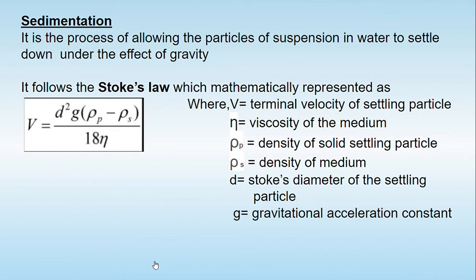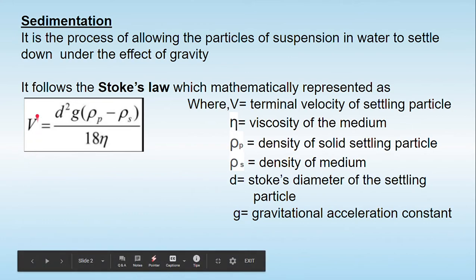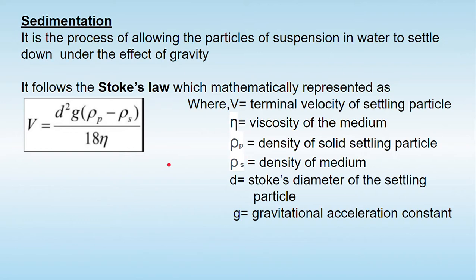Stokes law highlights the various parameters that affect the terminal velocity of the particle, denoted as V. The settling of the particle is affected by various factors. The first one is eta, which is the viscosity of the medium, and it is inversely proportional to the settling velocity of the particle.